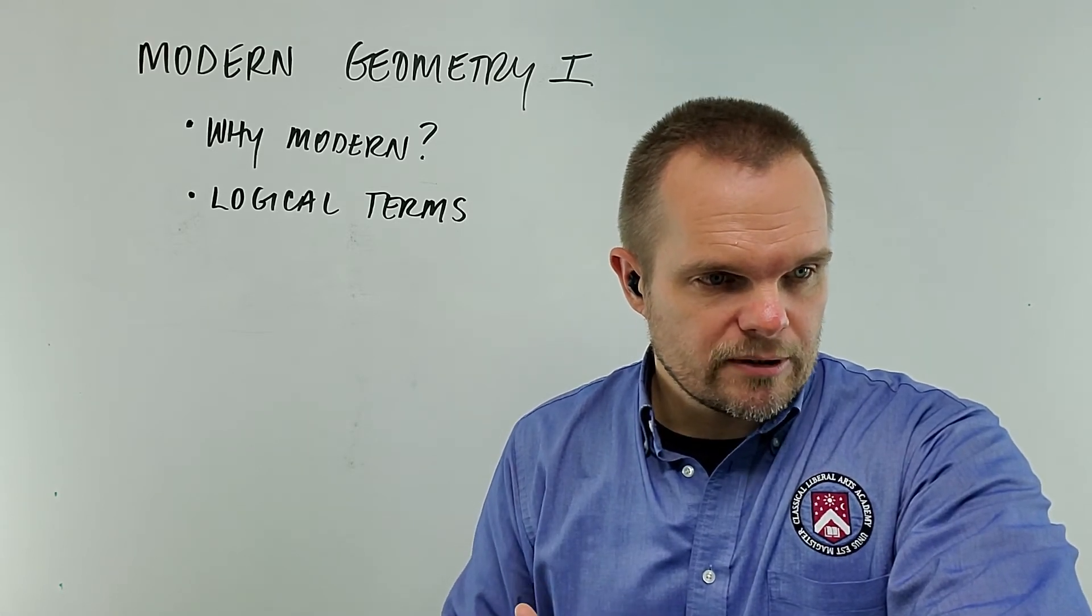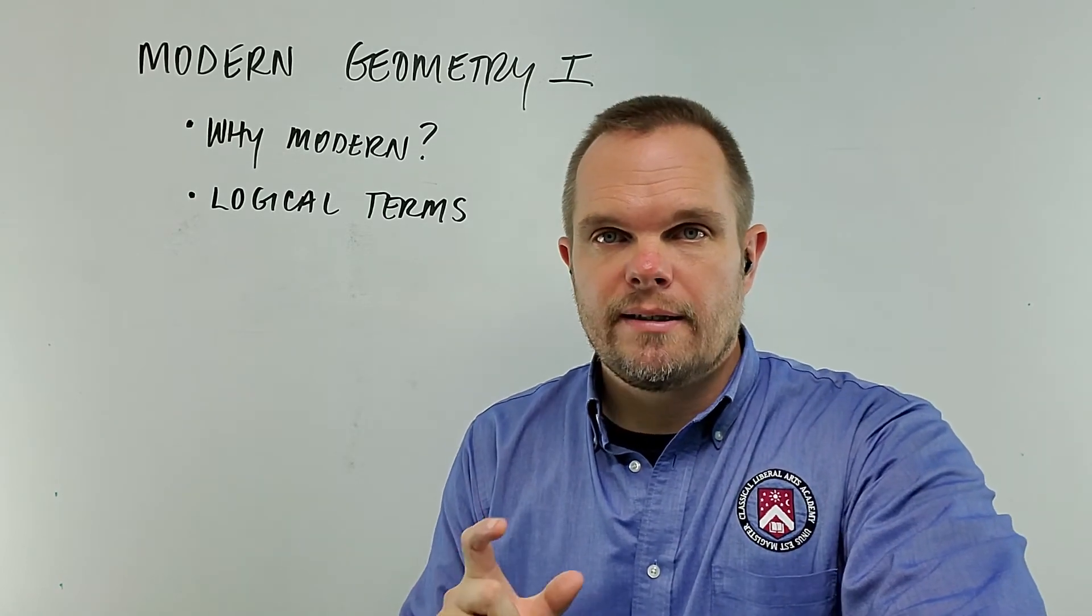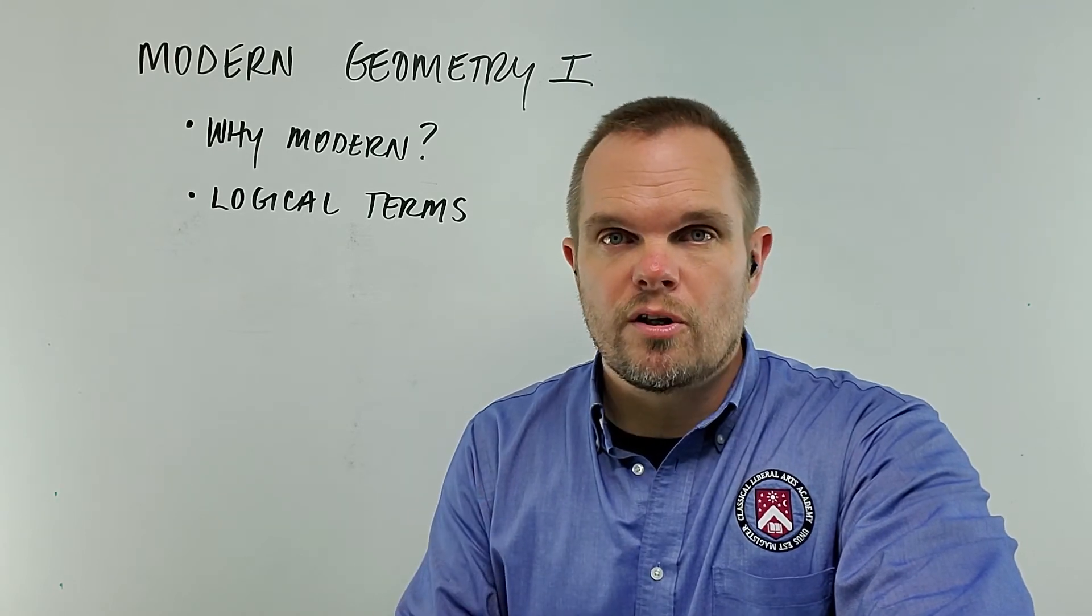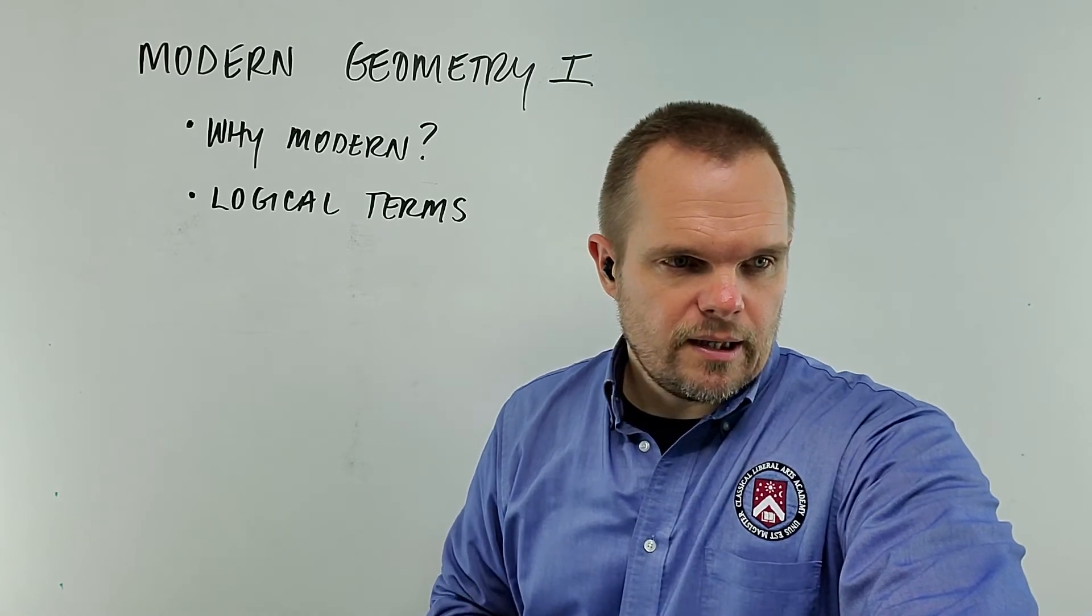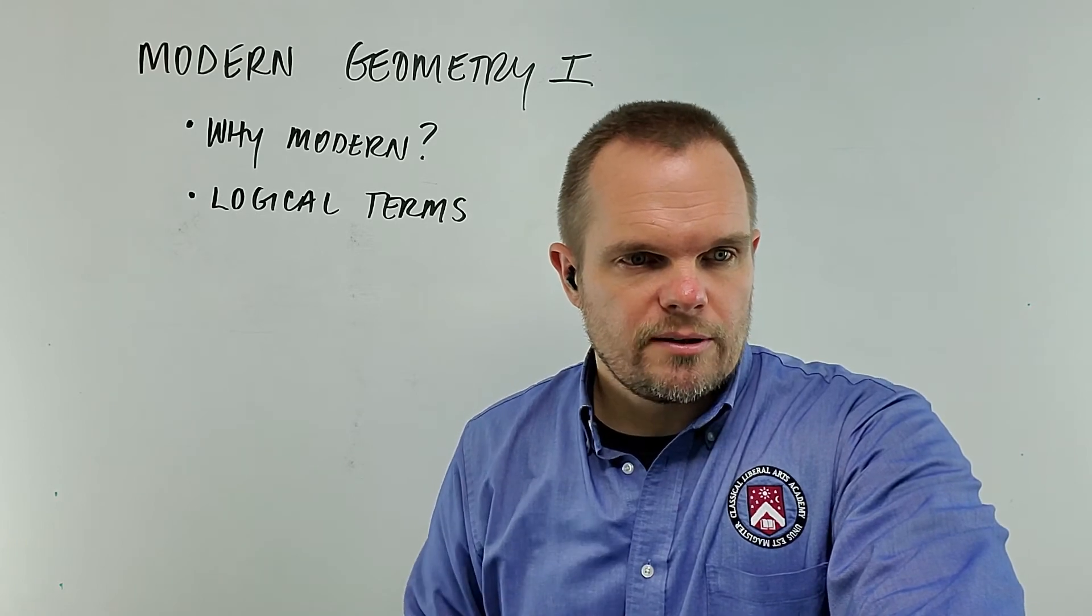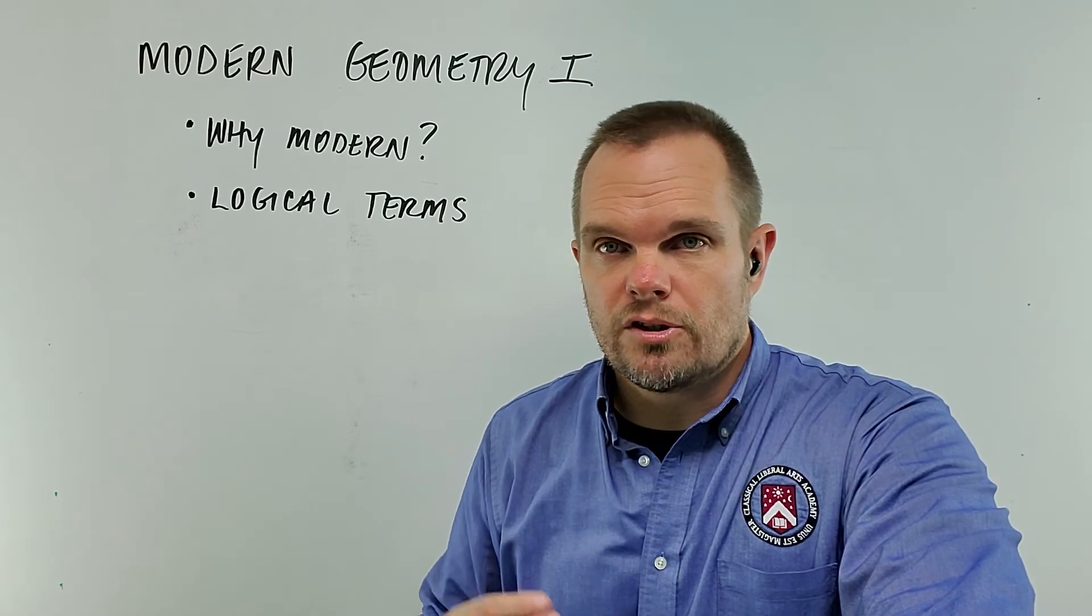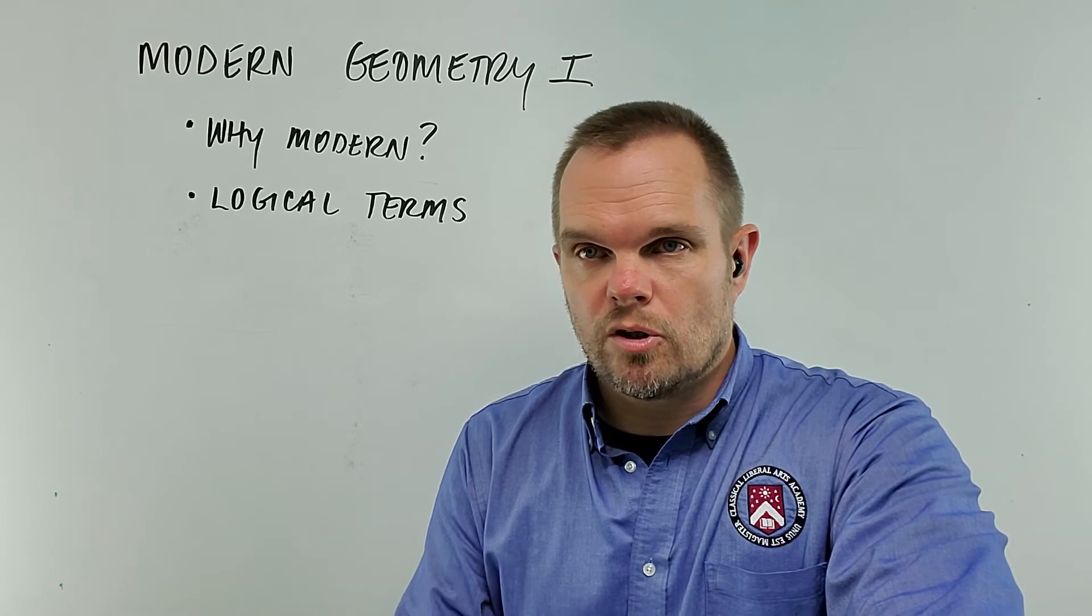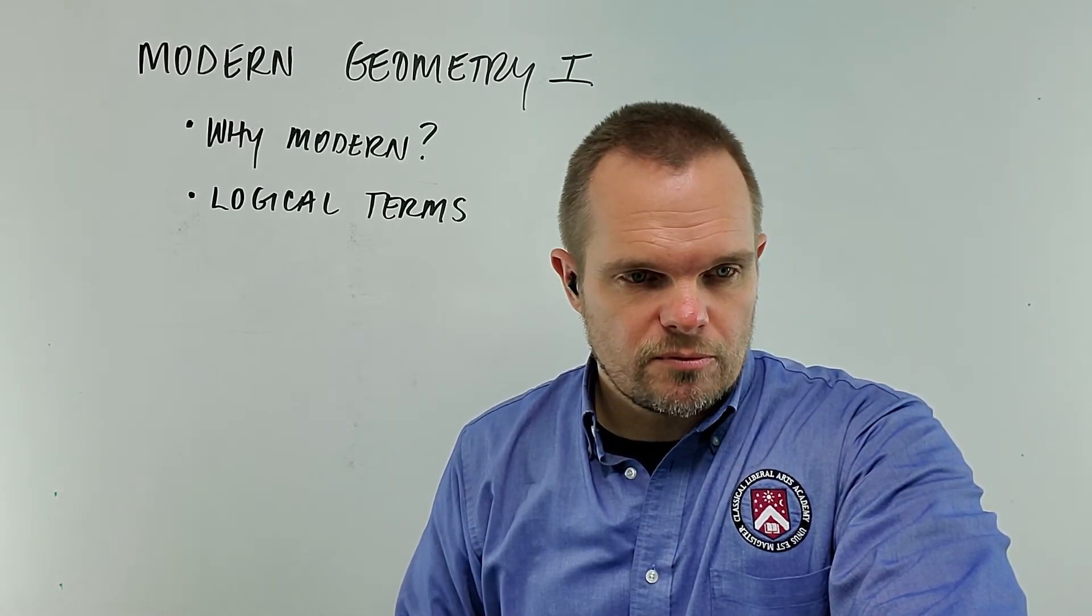Then we get into what a demonstration is, what indirect demonstration is. There's a Latin phrase in your definitions that you should know how to pronounce. It's reductio ad absurdum. That's under that indirect demonstration definition. And then it goes on to talk about axioms. And you learn, I think there's five or six general axioms. Axioms are self-evident truths that don't need to be proven because the truth of them is so clear. So, you'll learn some general axioms.